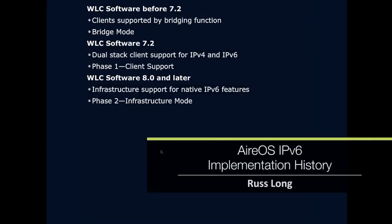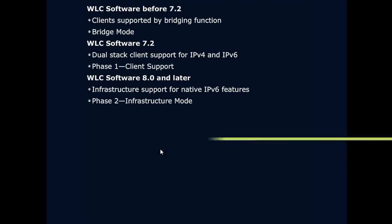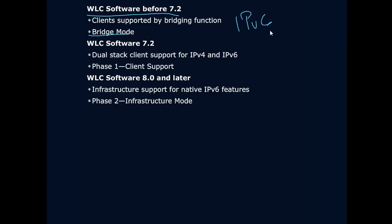Let's talk about the Aero OS and a little bit of its history. Wireless LAN controller software before Aero OS 7.2 basically had bridge mode for IPv6. The functions available for IPv6 were really just bridging — client support through a multicast function — and allowing the wireless LAN itself to have IPv6 enabled through multicast and bridge mode.